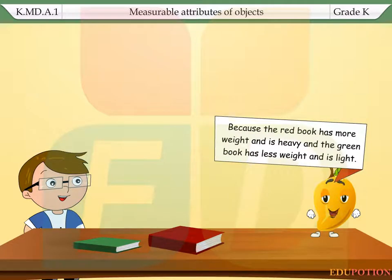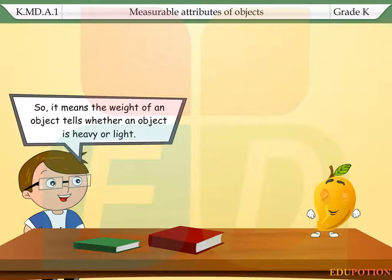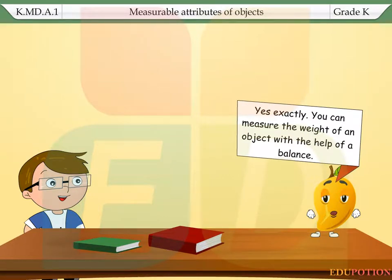Because the red book has more weight and is heavy, and the green book has less weight and is light. So it means the weight of an object tells whether an object is heavy or light. Yes, exactly.